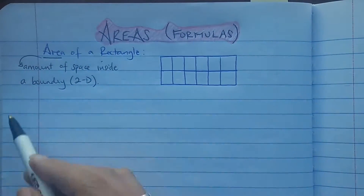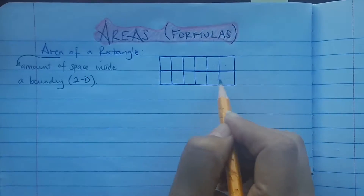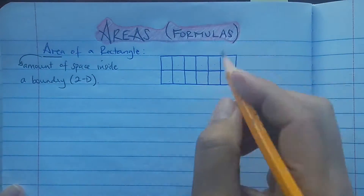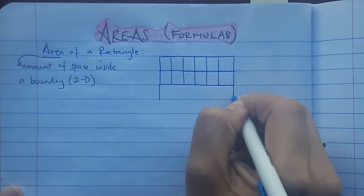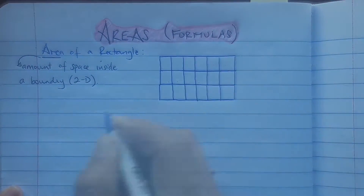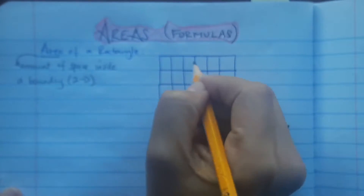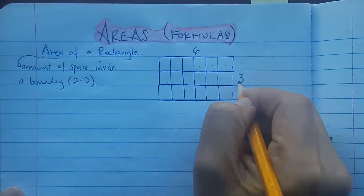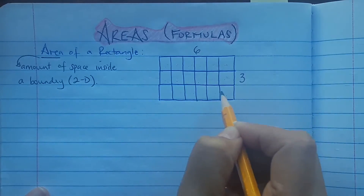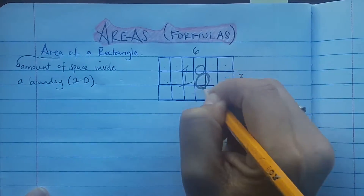So if each box represented one unit, I would count twelve units. I'm actually going to add another one, and without counting, how many would that be? It's a six by three, and obviously if the area is all the boxes around it, I would get 18.